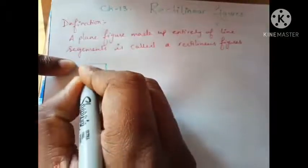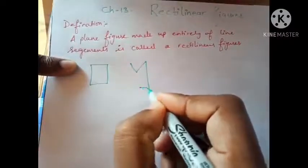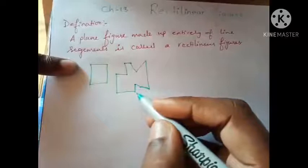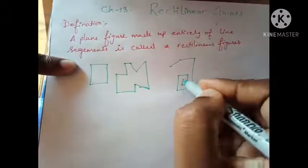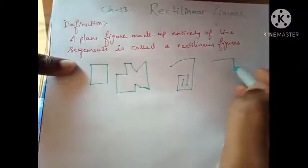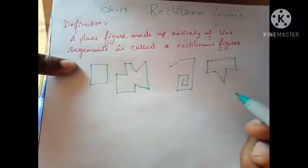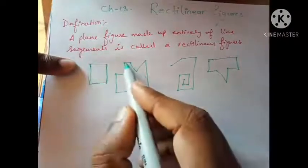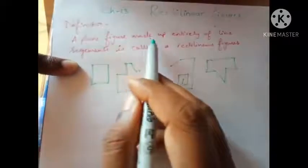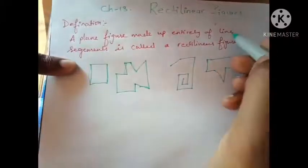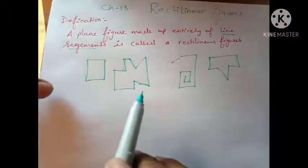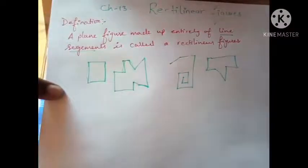So if I say a square is a rectilinear figure — this is also a rectilinear figure — because they are both made up of line segments. A plane figure made up entirely of line segments is called a rectilinear figure. A rectilinear figure can be a closed figure or it can also be an open figure.